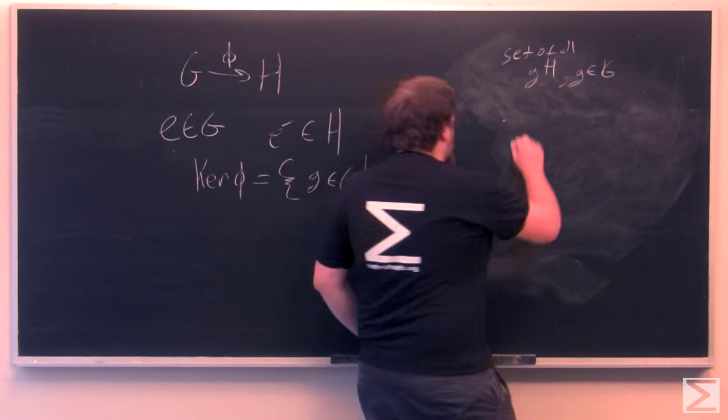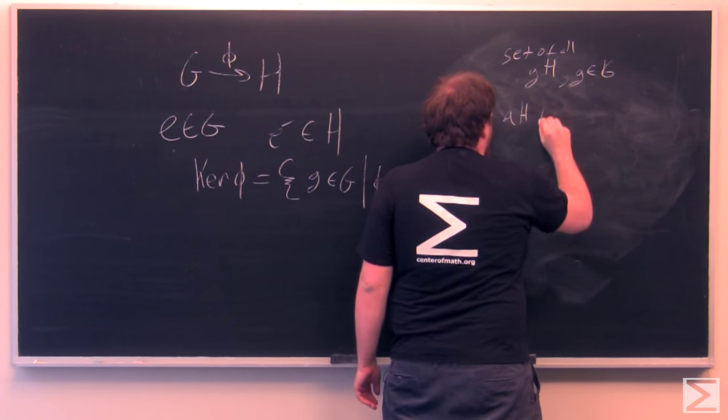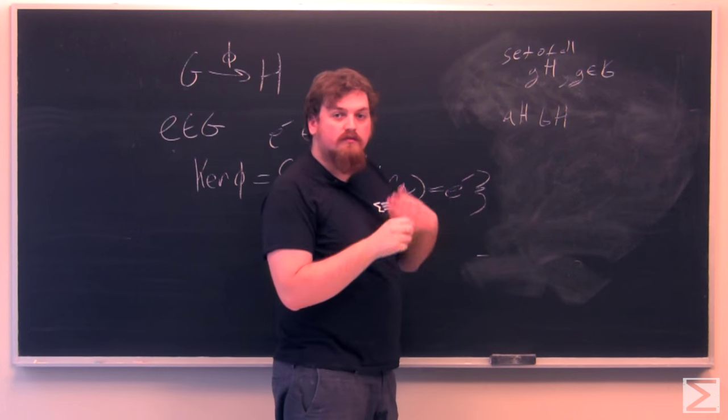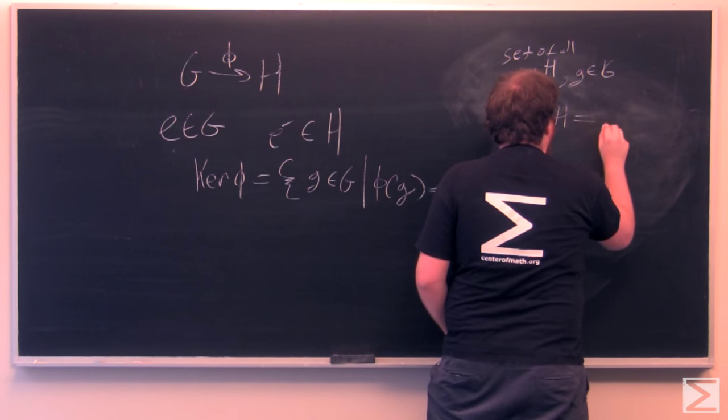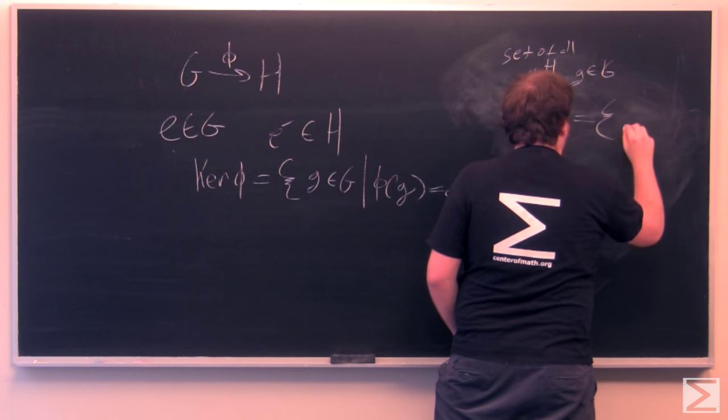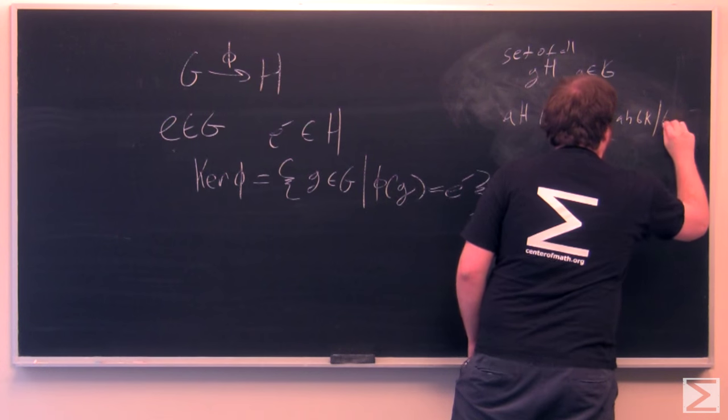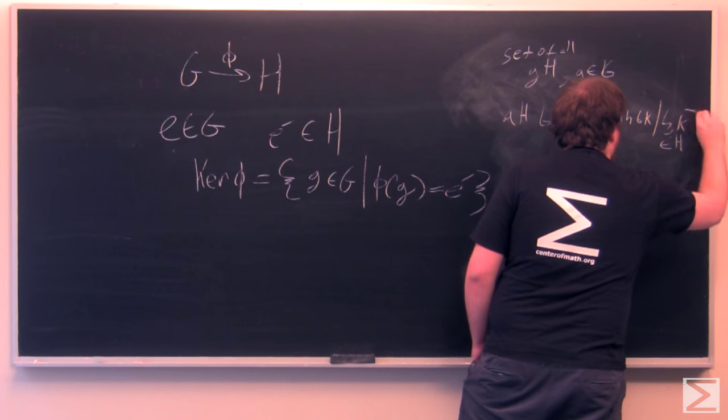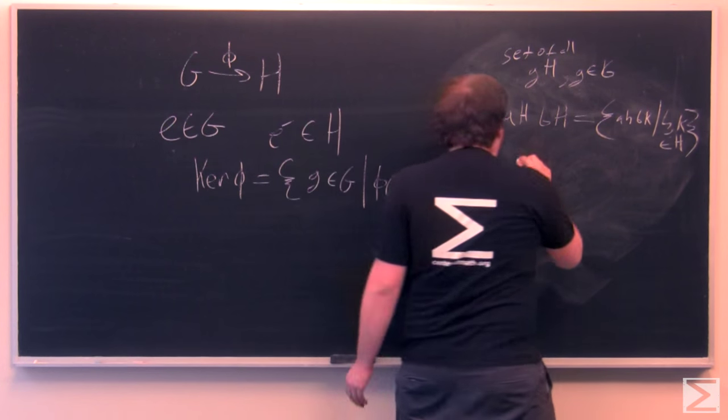If A and B are in G, then we can make the product AH, BH. This is the set of all A, H, B, K for H and K in H.